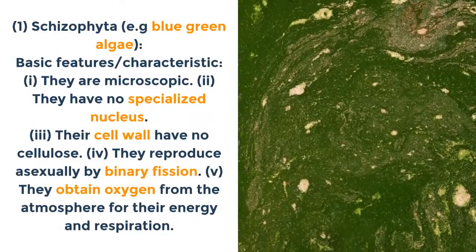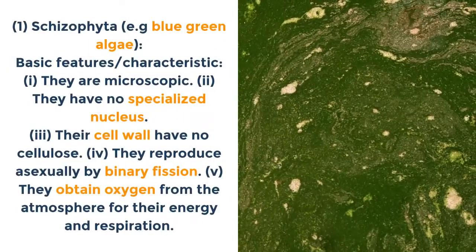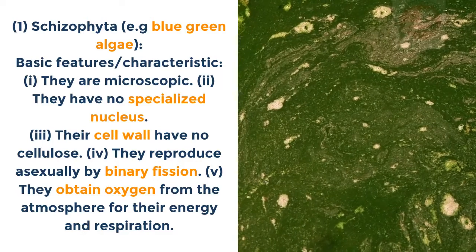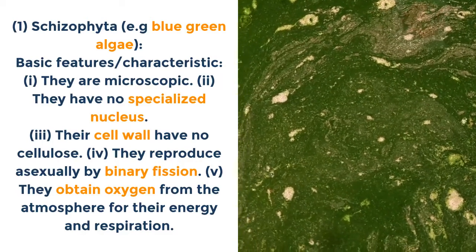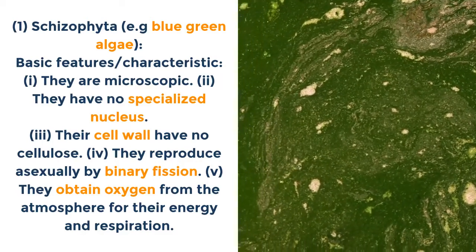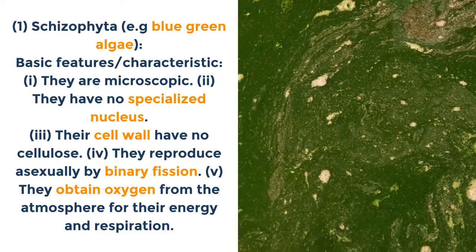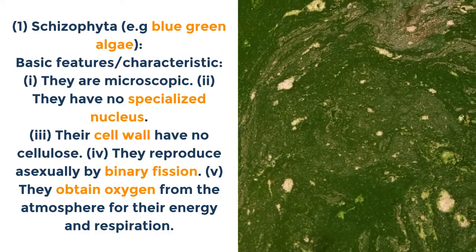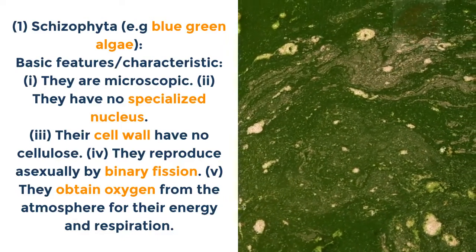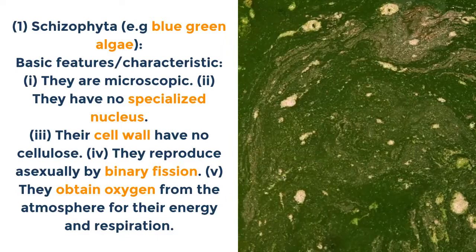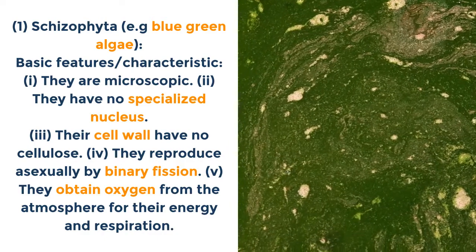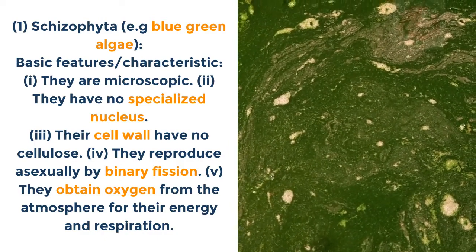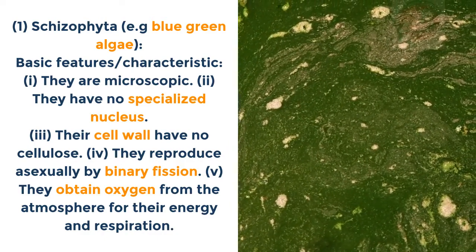Schizophyta, e.g. blue-green algae — basic features: i. They are microscopic. ii. They have no specialized nucleus. iii. The cell wall has no cellulose. iv. They reproduce asexually by binary fission. v. They obtain oxygen from the atmosphere for their energy and respiration.